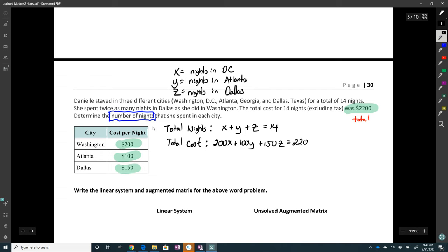And then we have the special restriction. That is twice as many nights in Dallas as you did in Washington. Okay, so Dallas is the bigger one. So that means that Dallas has to equal 2 times D.C. If I put that in an equation, Dallas is z. 2 times D.C. is x. So z is equal to 2x. So that's my linear system. Hopefully you all got that.